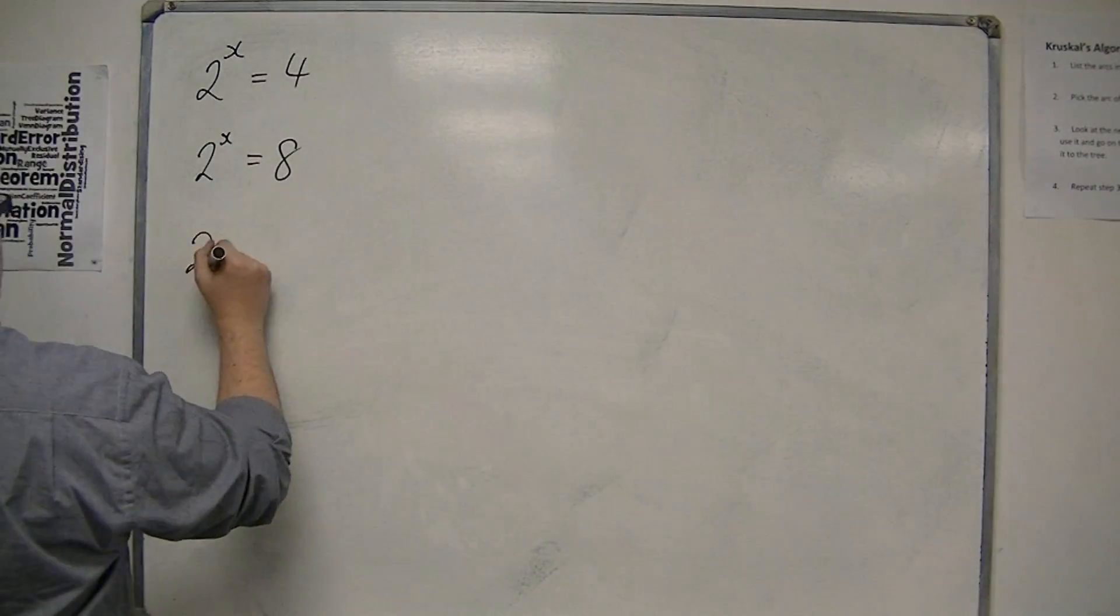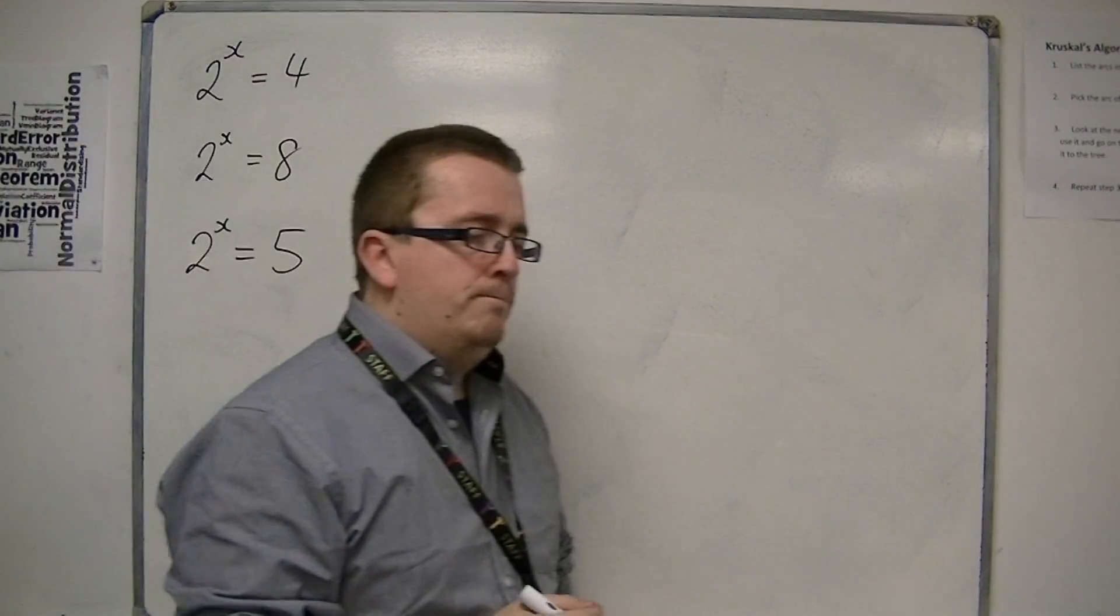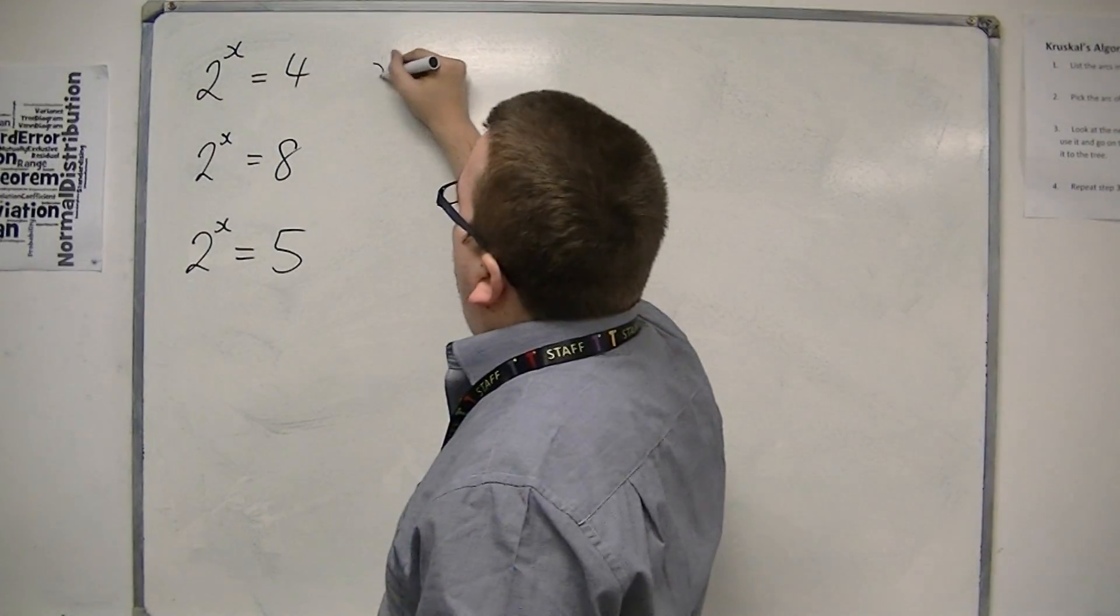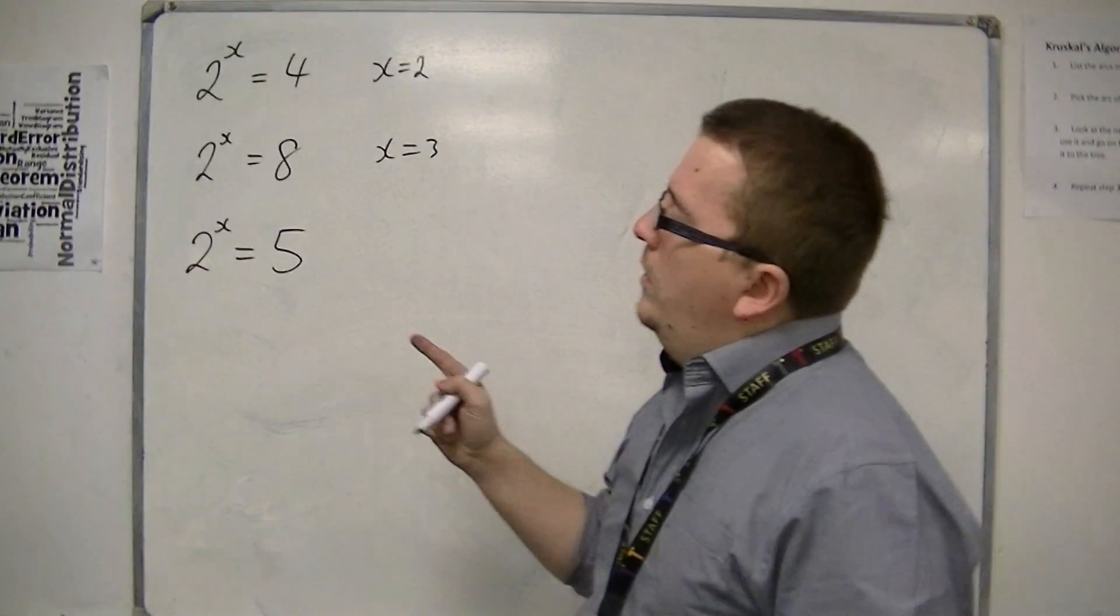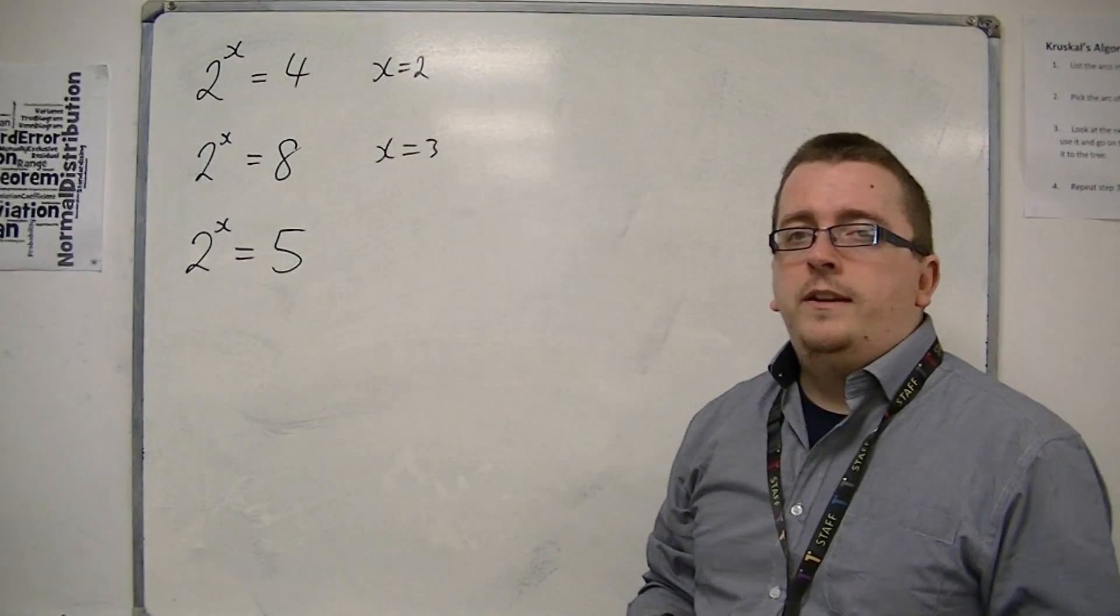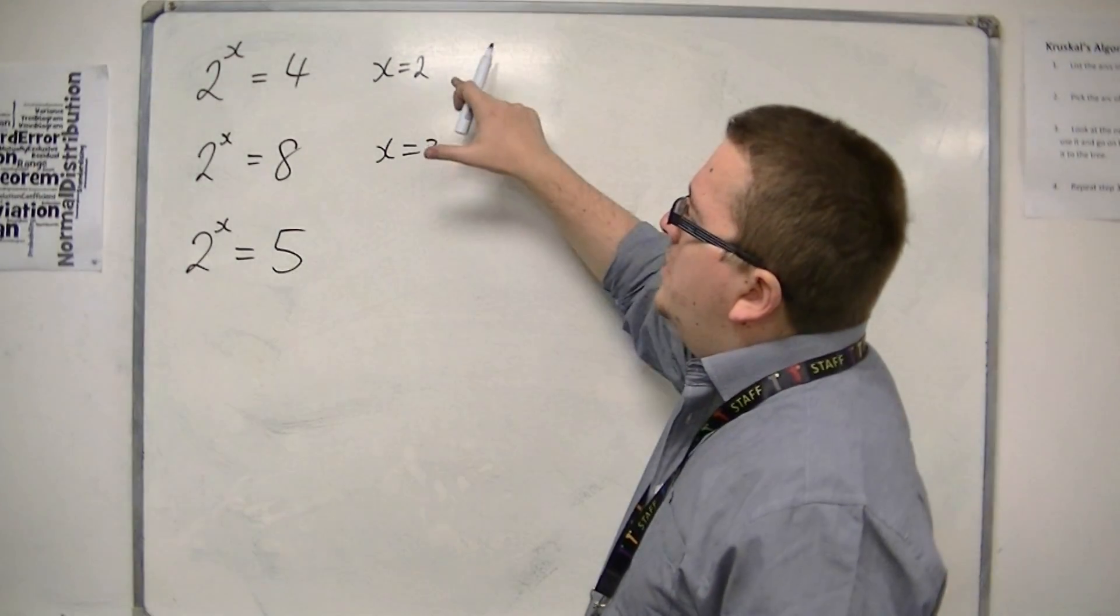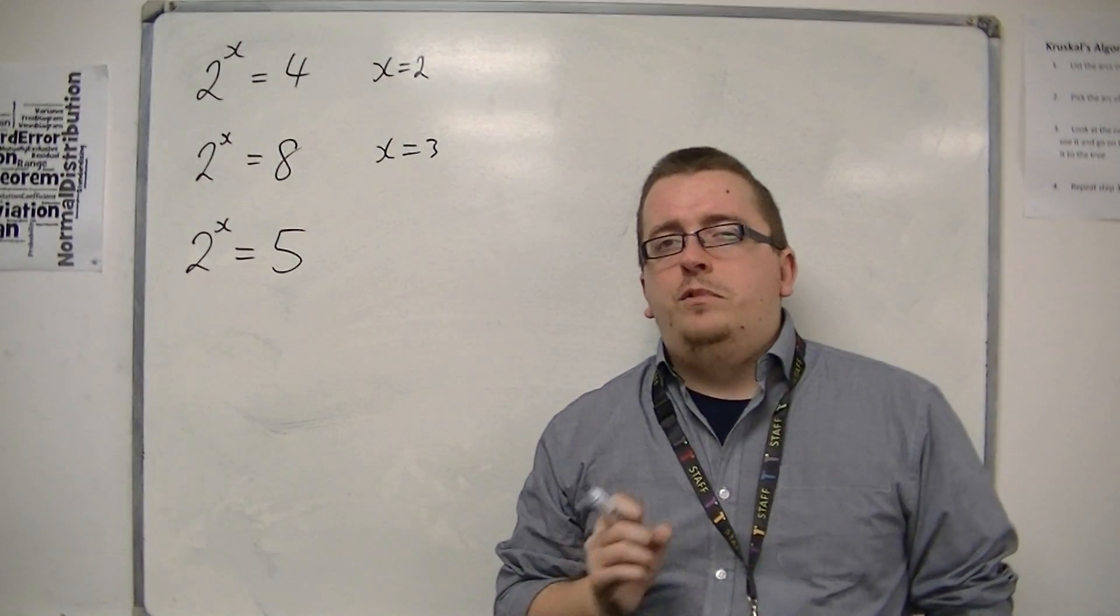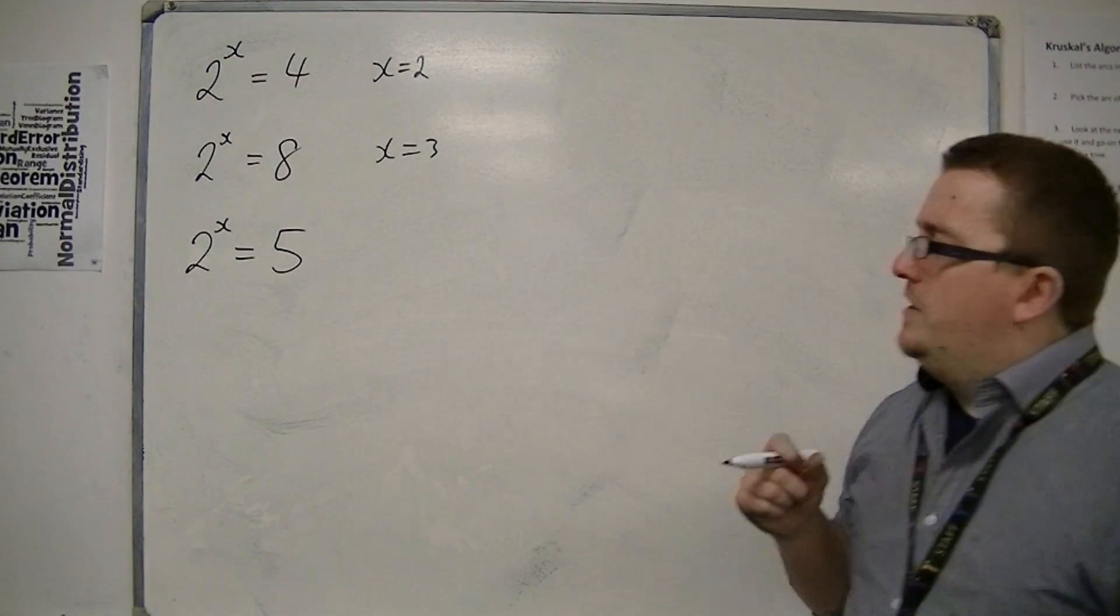However, what if I had 2 to the x is equal to 5? Now here's a problem, because I know that for this solution we had x is 2, and that solution was x is 3. But now I've got 2 to the power of something is 5, a number between 4 and 8, and so logically I would expect that my answer, x, is somewhere between 2 and 3. But I don't have an exact number for it, so let's have a look at this in a little bit more detail.